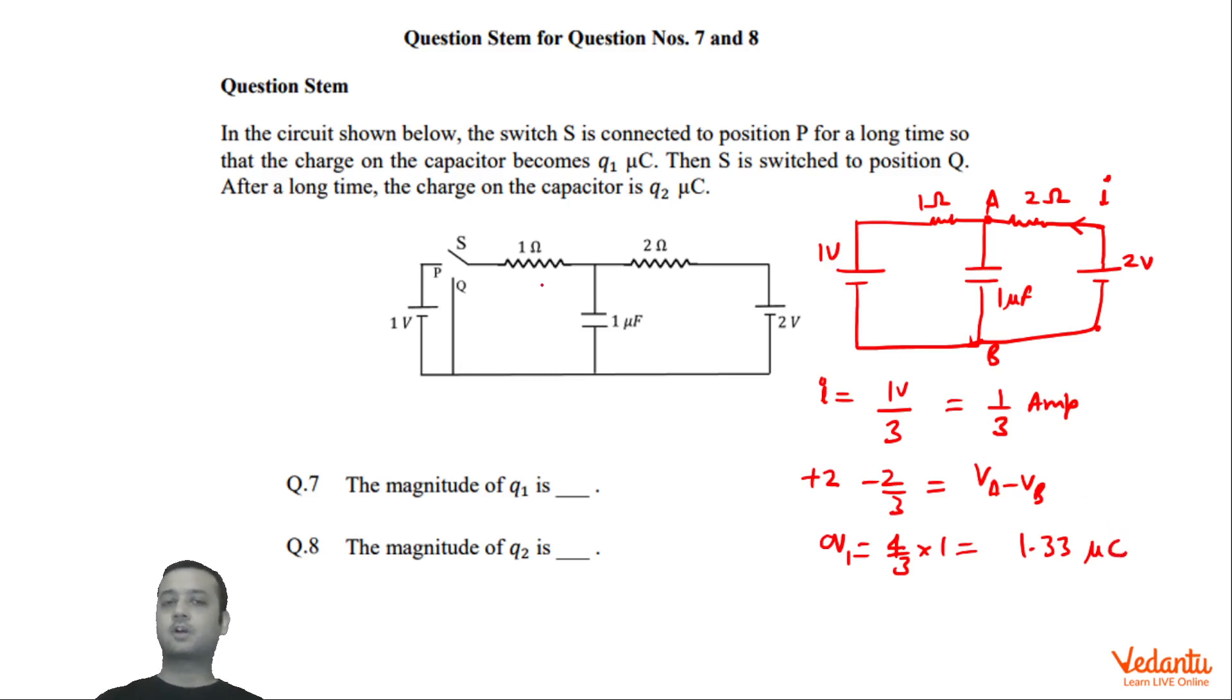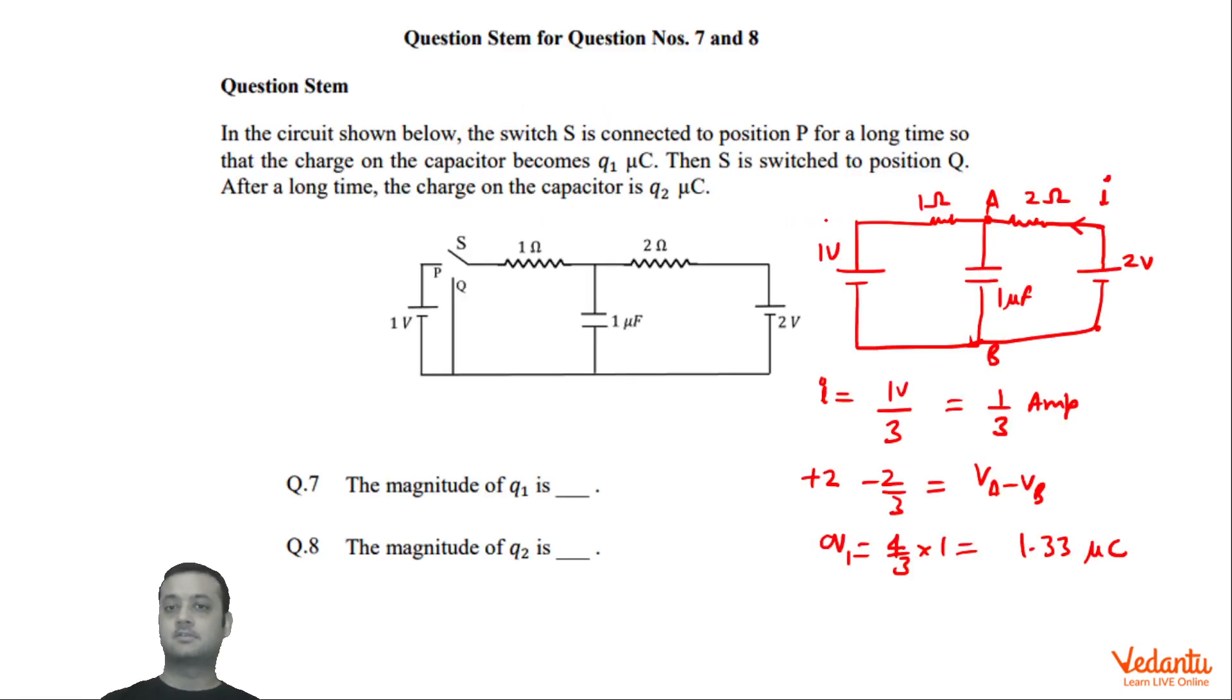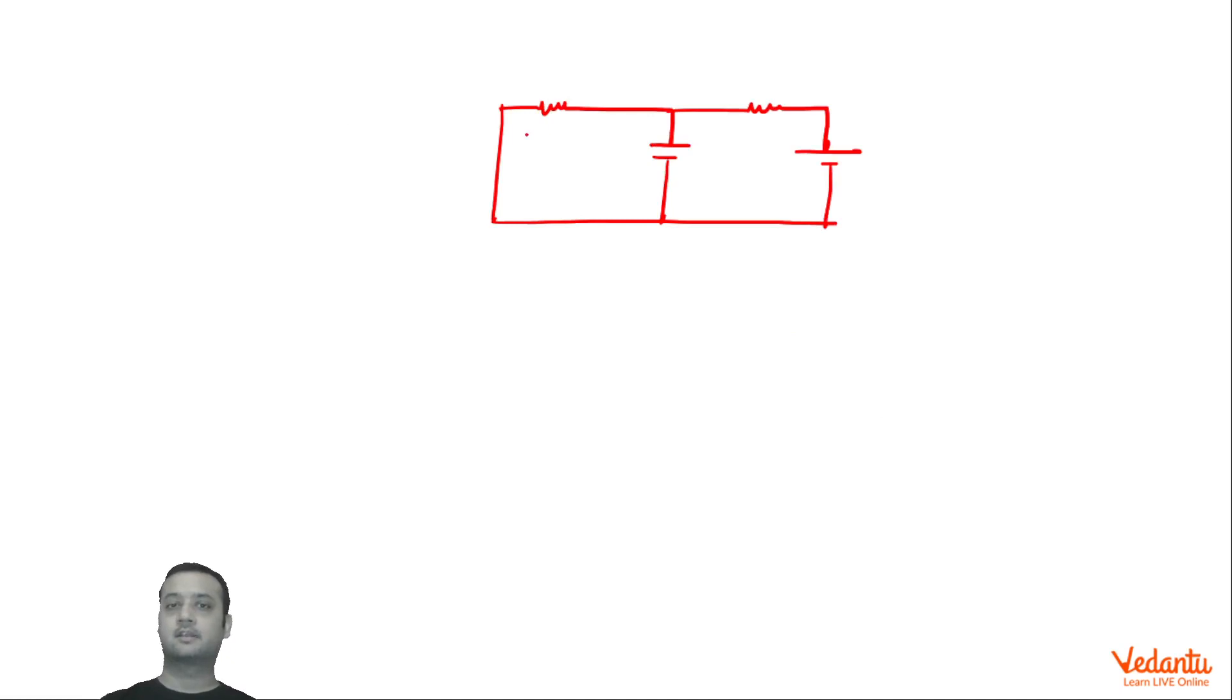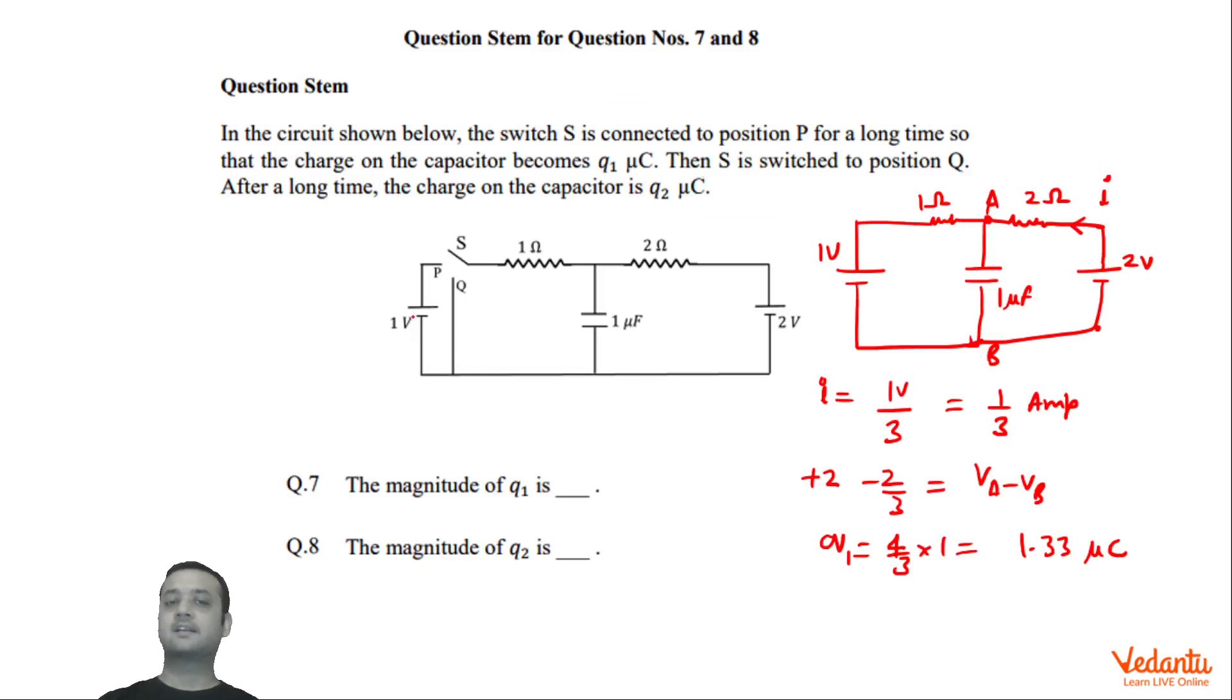Similarly if you talk about when the switch is in this position, like when the switch has come in this position Q. Then let's draw the circuit here. The capacitor will be like this. So you can see that this is 2 volts, 2 ohms, 1 ohm and 1 microfarad. So 1, 2, 2 and 1 microfarad. This battery will go out of the circuit.